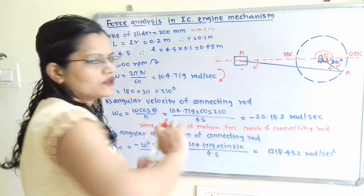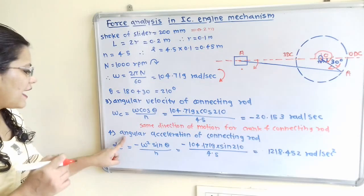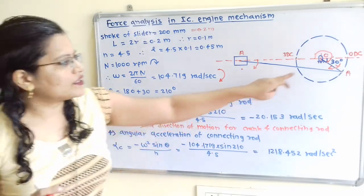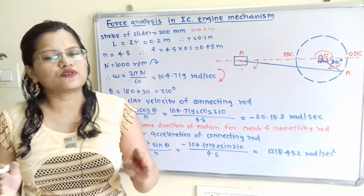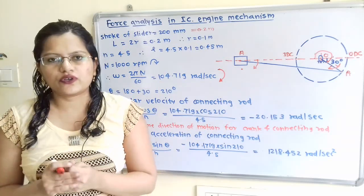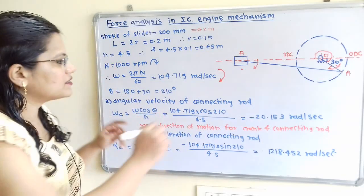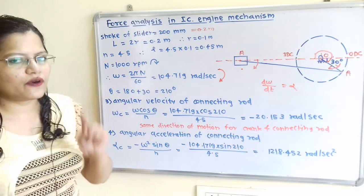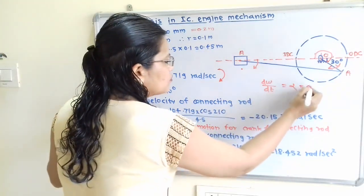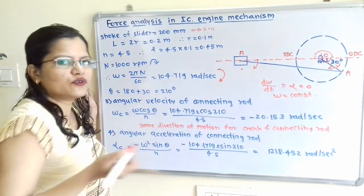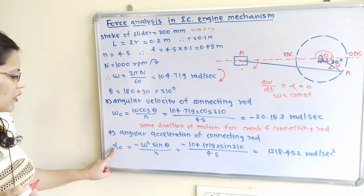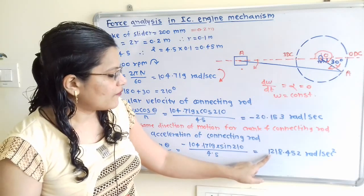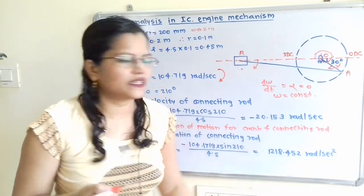For angular acceleration of connecting rod: since alpha of the crank is not mentioned in the question, alpha = 0, meaning omega is uniform. We use: alpha_C = -omega²·sin theta / N. Substituting values gives alpha_C = 1218.452 rad/s².